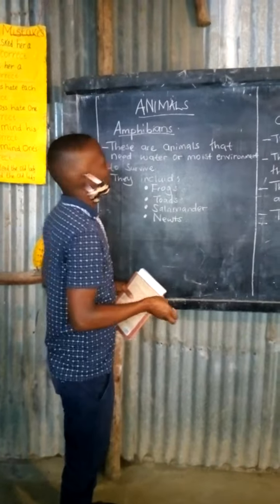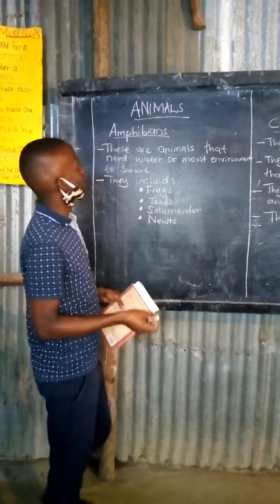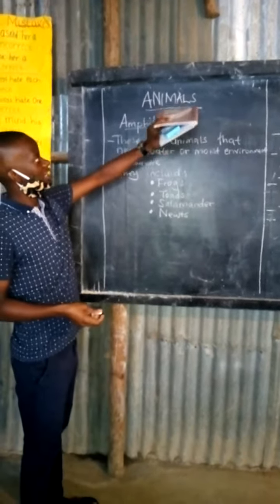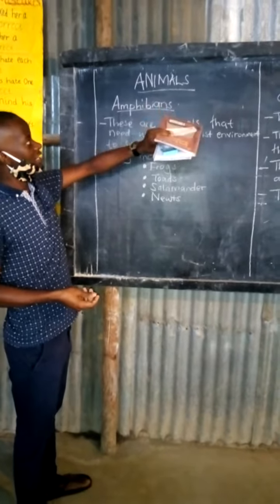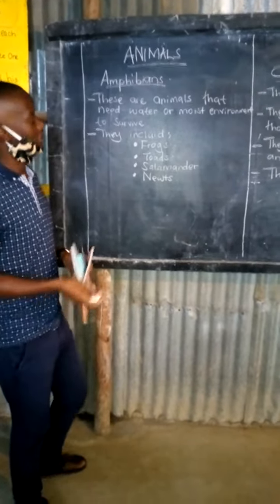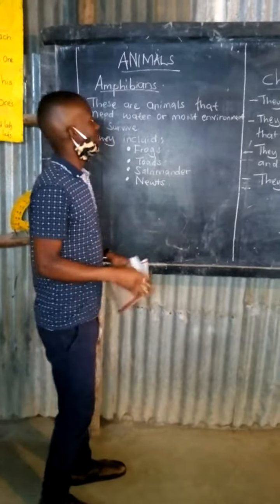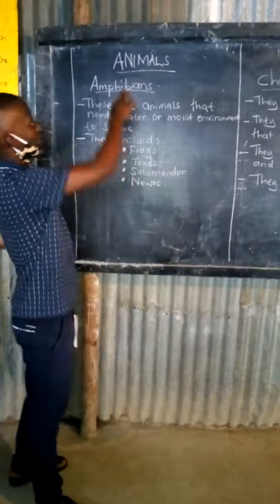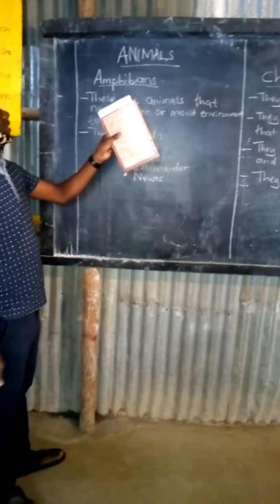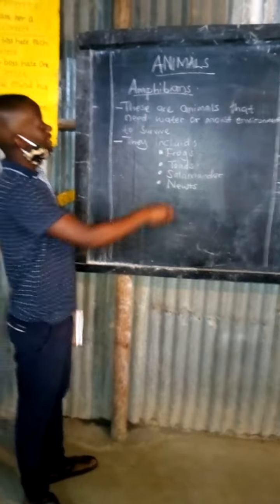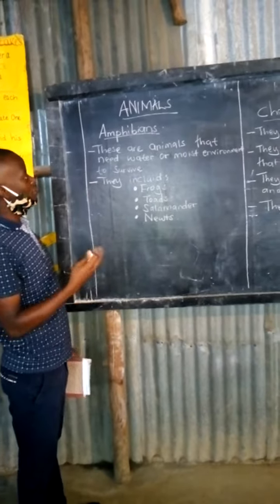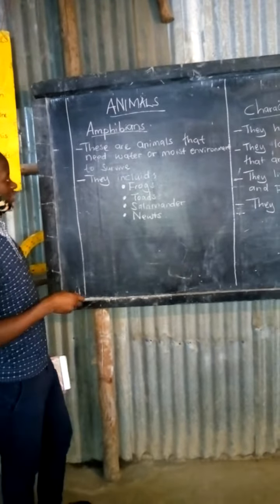Good afternoon boys and girls. Our topic is animals, which we have started, and we have discussed mammals. Today I want us to do amphibians. So what are amphibians? Amphibians are animals that need water or a moist environment to survive.